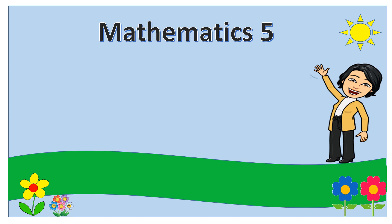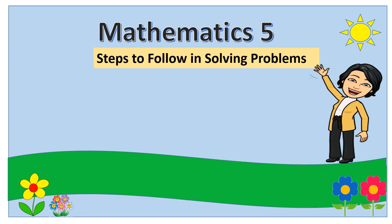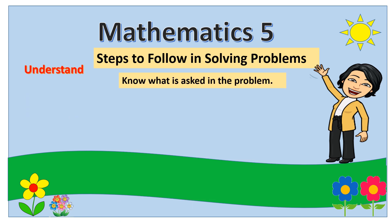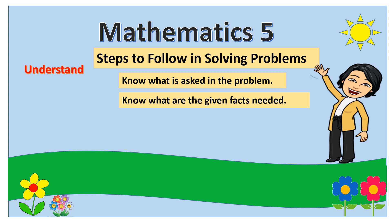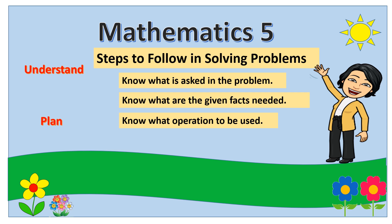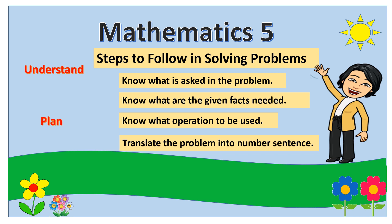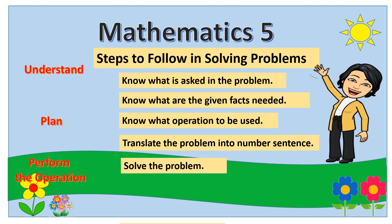But before that, let us review first the steps to be followed in solving the word problem. First, you need to understand the problem — know what is asked in the problem and know the given facts needed to solve it. Next is you need to plan: know what operation to be used, and then translate the problem into a number sentence. And the last, perform the operation — solve the problem and then label your answer.